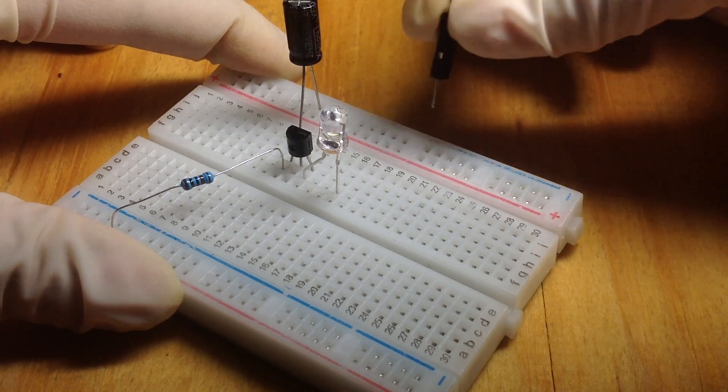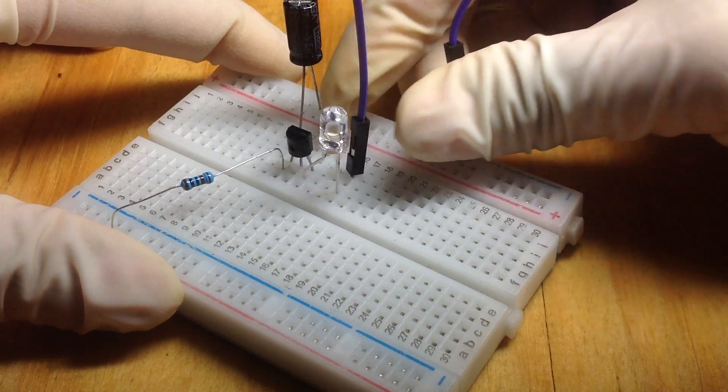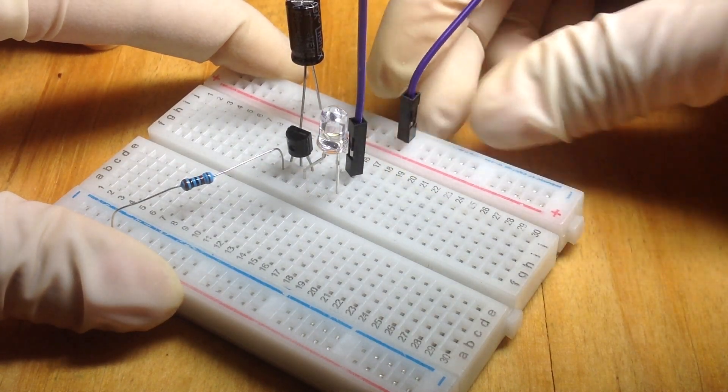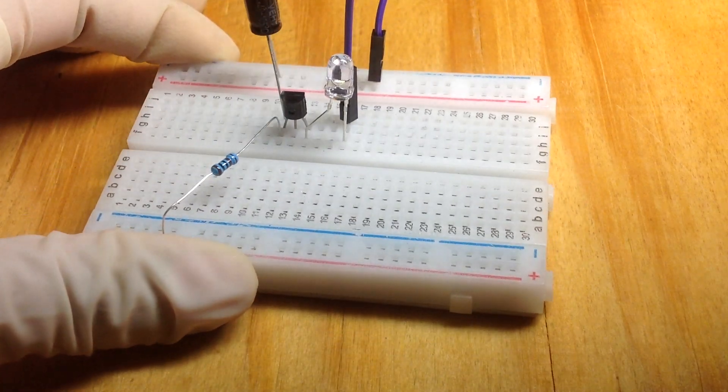Get the jumper wire and connect it to the negative lead of the LED and the negative terminal of the breadboard.